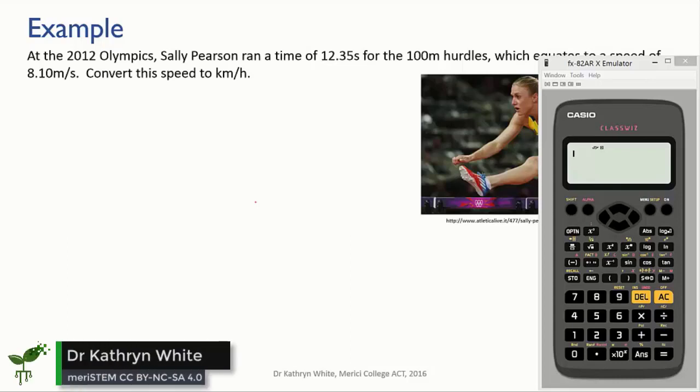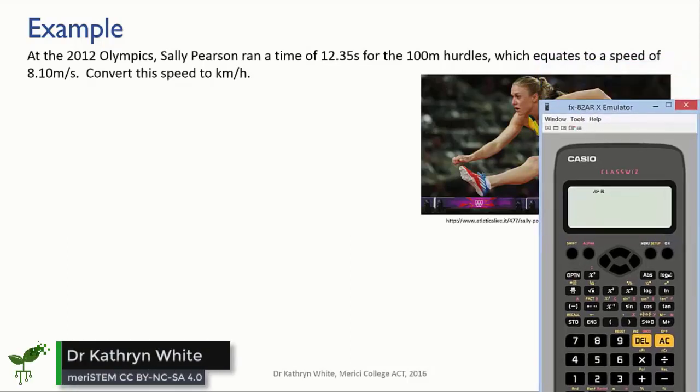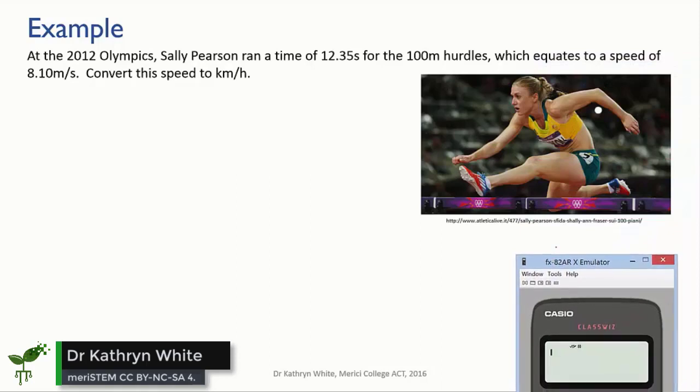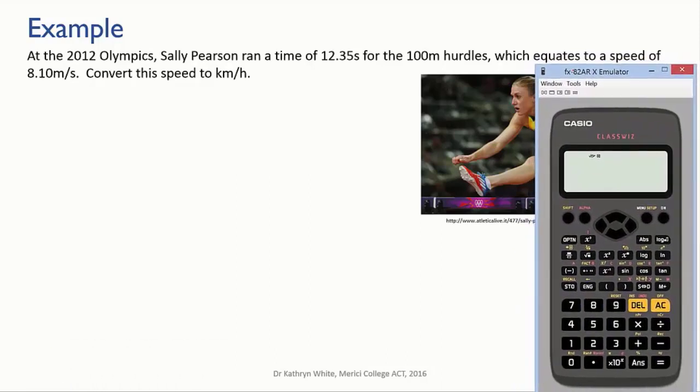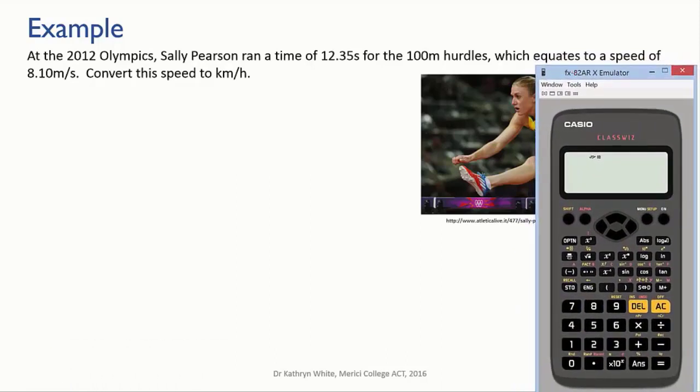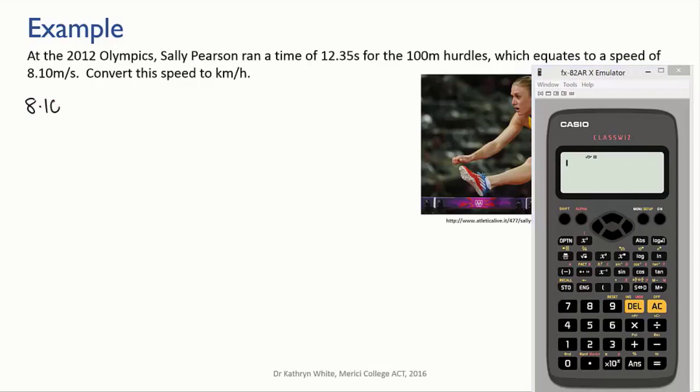Okay, let's try an example where we need to change both parts of a compound unit. When Sally Pearson won the 100 metre hurdles at the 2012 World Championships, she ran at an average speed of 8.10 metres per second. Let's convert this to kilometres per hour, which is a speed unit that you're probably more familiar with.